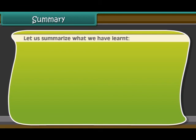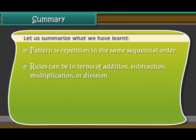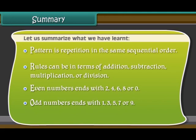Let us summarize what we have learned. Pattern is a repetition in the same sequential order. Rules can be in terms of addition, subtraction, multiplication, or division. Even numbers end with 2, 4, 6, 8, or 0. Odd numbers end with 1, 3, 5, 7, or 9.